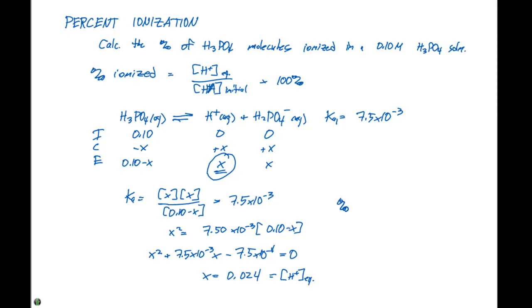Now, we plug this into the percent ionization equation, which is the concentration of H+ at equilibrium divided by the HA initial concentration. That equals 0.024 divided by 0.10, multiplied by 100%. We find that our percent ionization equals 24%.